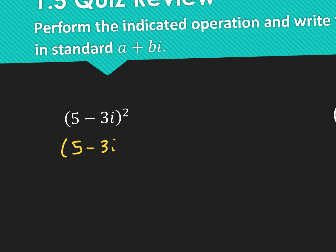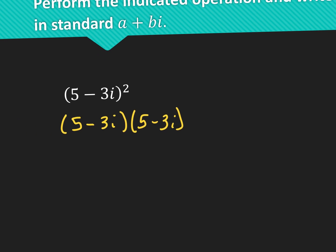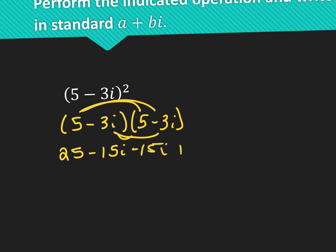So I have the binomial 5 minus 3i, quantity squared. What that means is I have 5 minus 3i two times. So I'm going to write them both out and then FOIL. 5 times 5 is 25. 5 times negative 3i is negative 15i. Negative 3i and 5 is negative 15i.